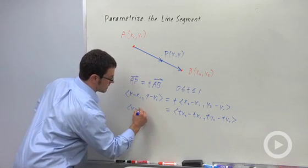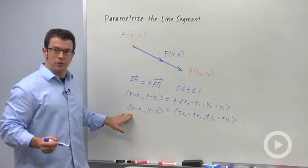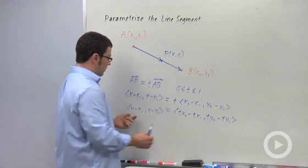And that equals x minus x1, y minus y1. Now, to go from a vector equation to parametric equations, all I have to do is separate these by components.